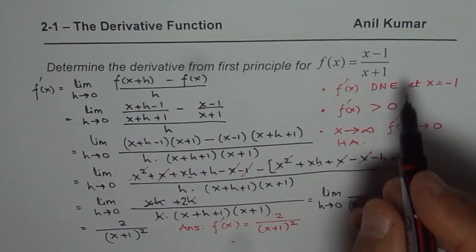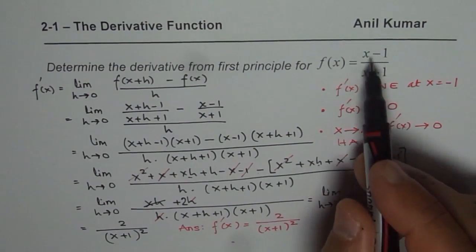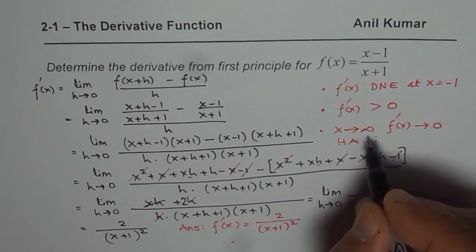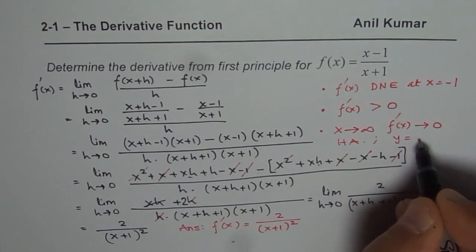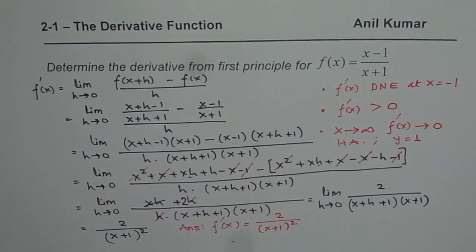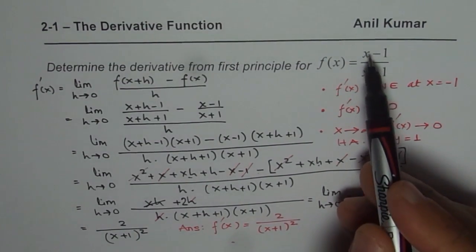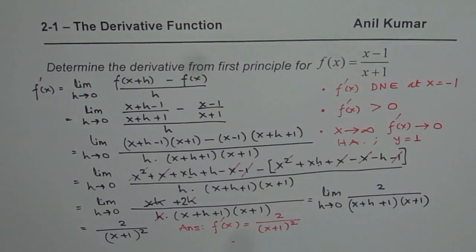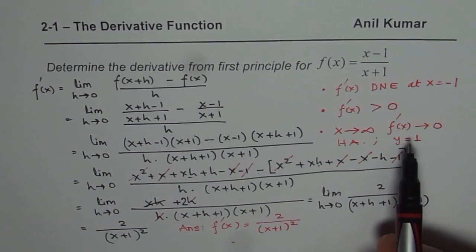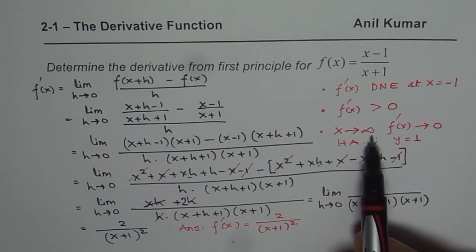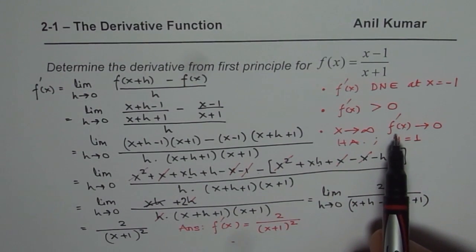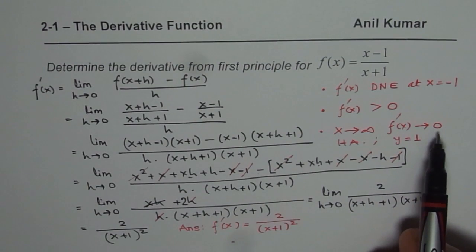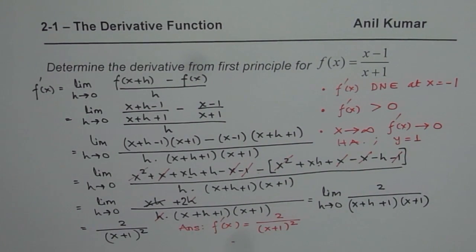We will soon learn how to find horizontal asymptotes formally. In this case the value of the horizontal asymptote is y equals 1, so the function approaches 1 when x is very large. From the derivative, when x is very large, the slope of the tangent approaches 0. Those are a few very important things we learn from the derivative of the given function. I hope that helps. Thank you.